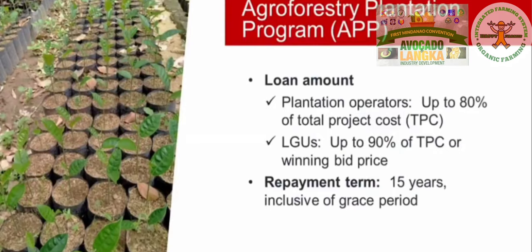Plantation operators may borrow up to 80% of the total project cost. LGUs can borrow up to 90% of the total project cost or the winning bid price, whichever is lower. Repayment under the APP is up to a maximum of 15 years inclusive of grace period, depending on the scope and nature of the project.